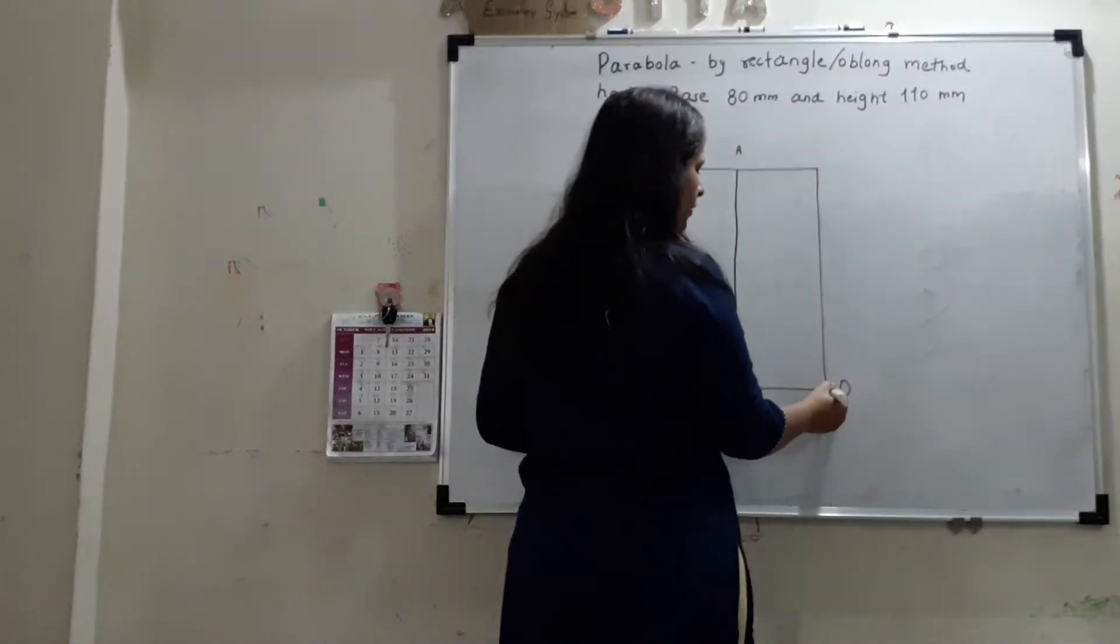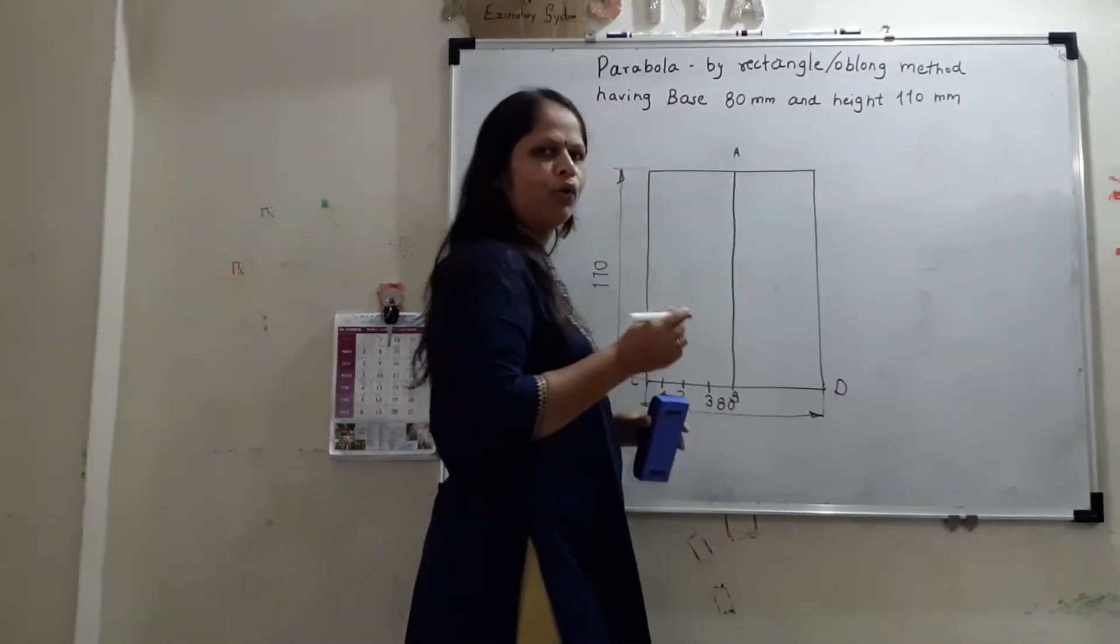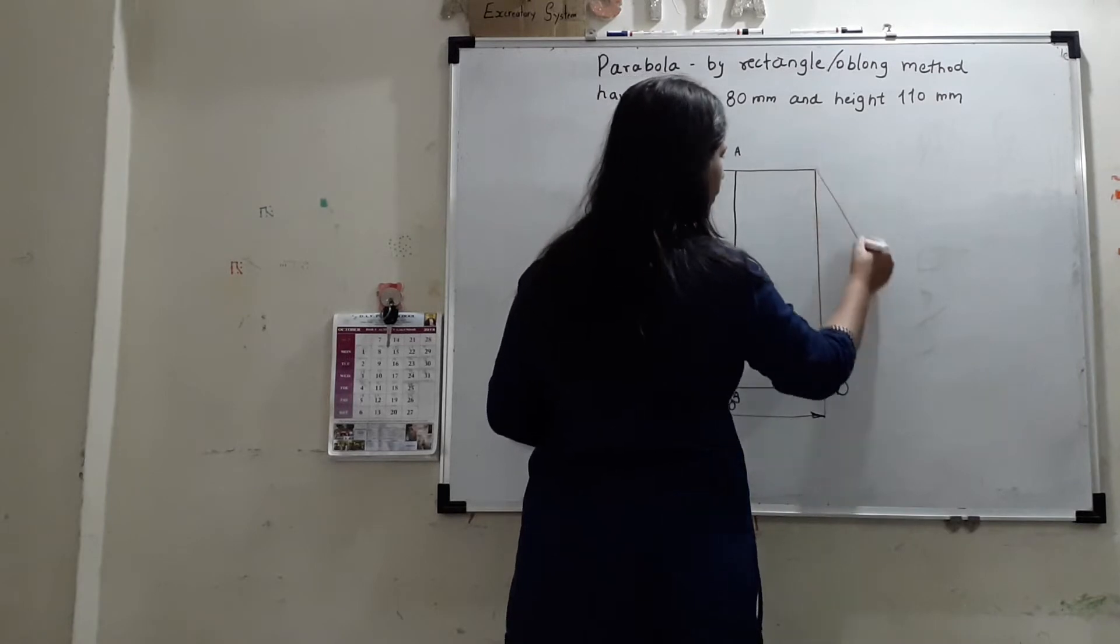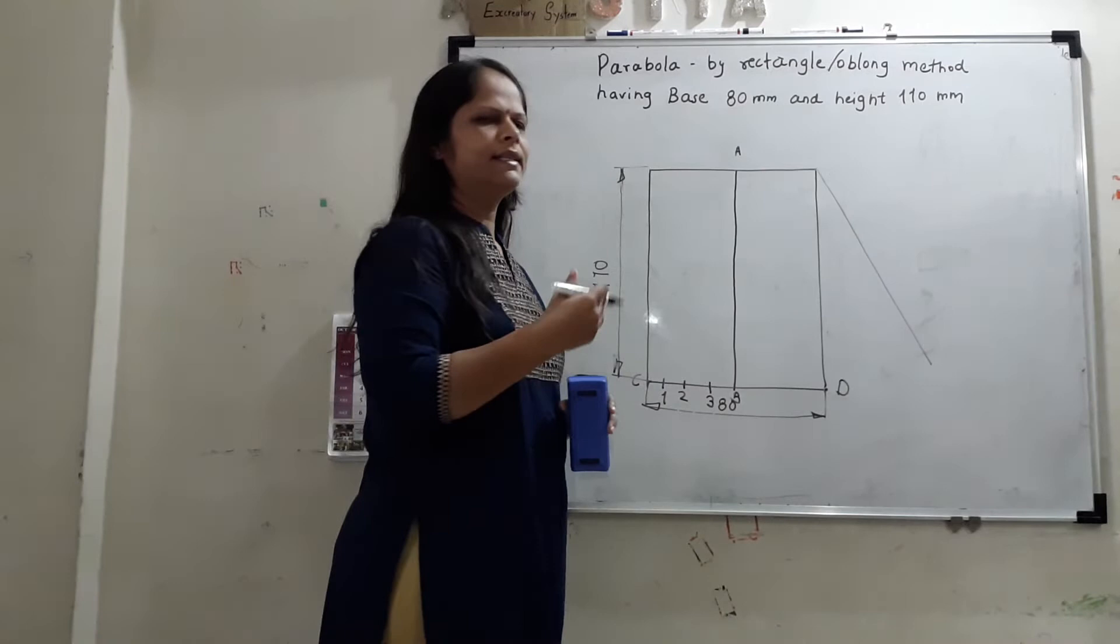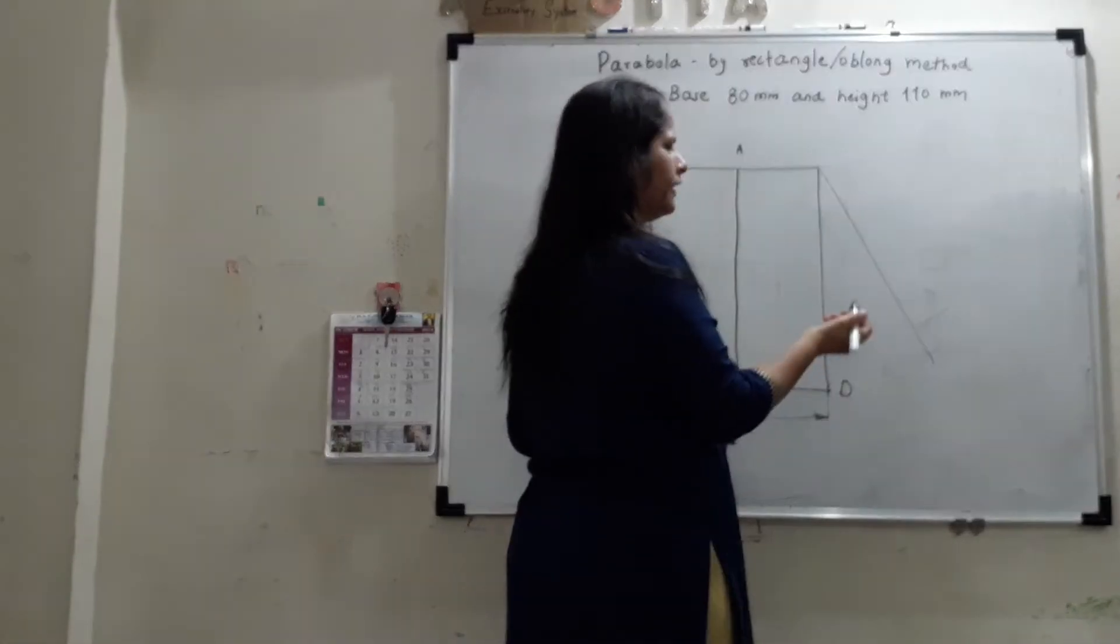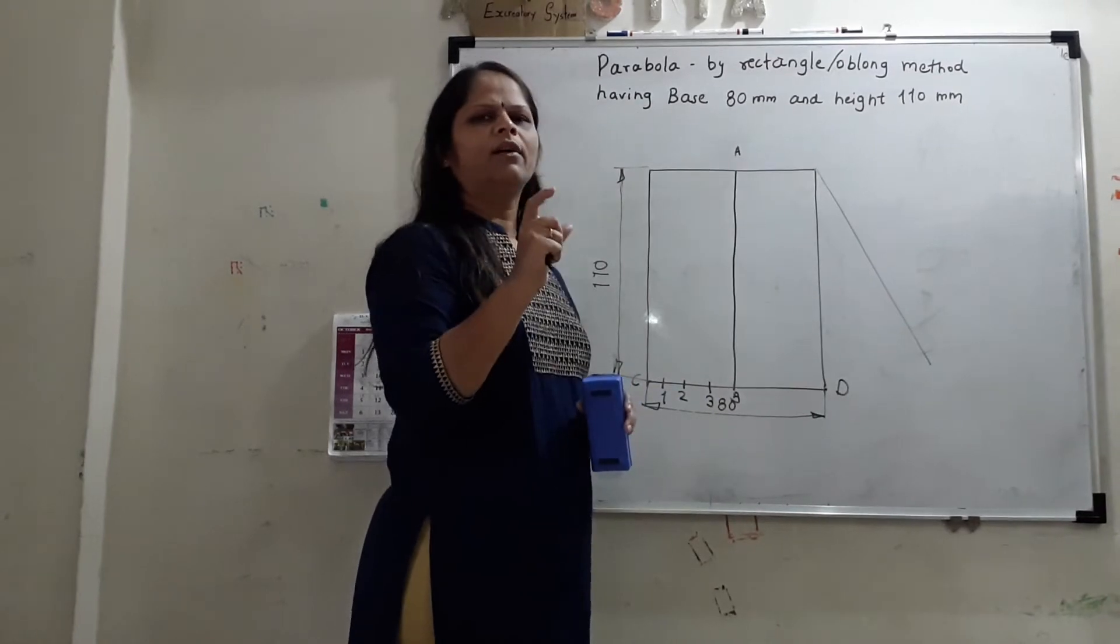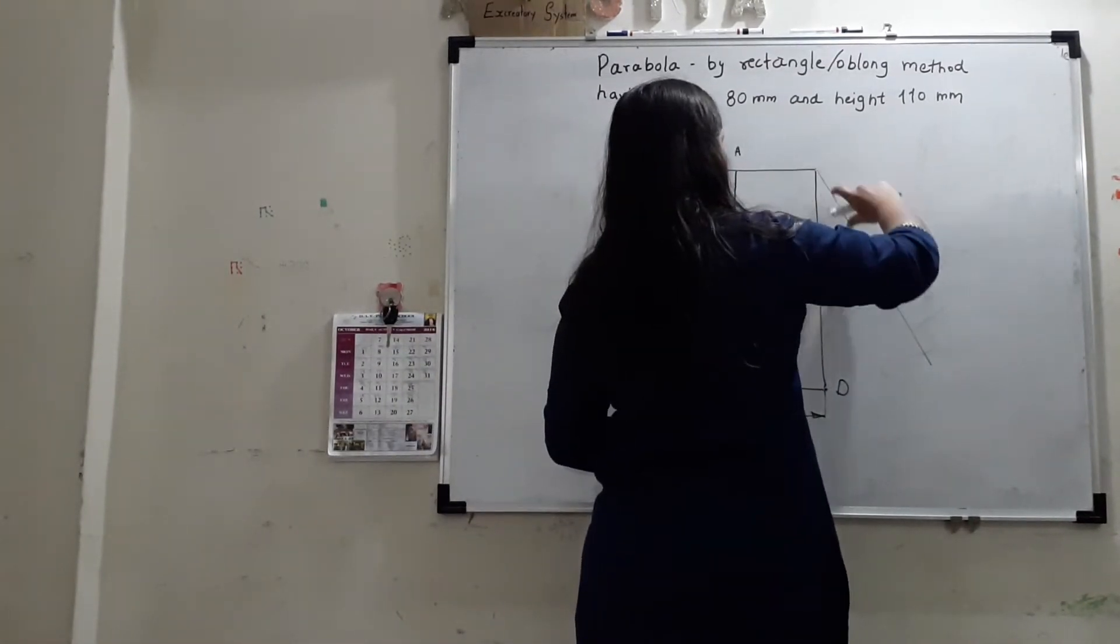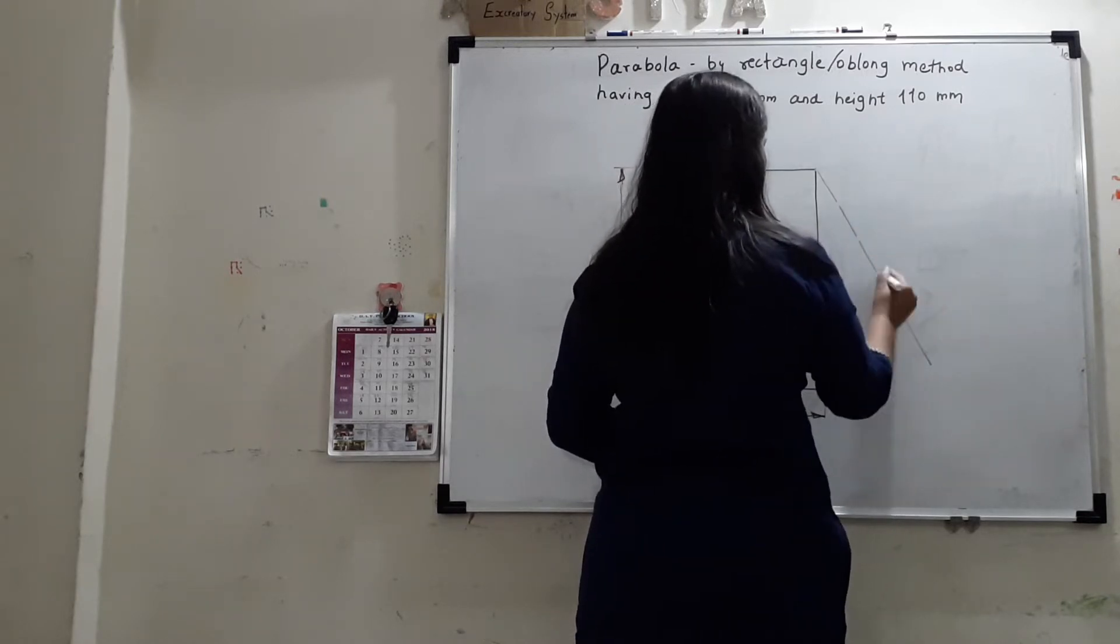Suppose I have to divide this line segment in 4 equal divisions. From any of the end, like this line is having 2 ends, any of the end, draw one line at less than 45 degree angle. Draw one line at less than 45 degree angle. Then, have any fixed distance in the rounder, any distance in the rounder and you divide it in equal 4 parts. 1, 2, 3 and 4. So, this is the 4th division.